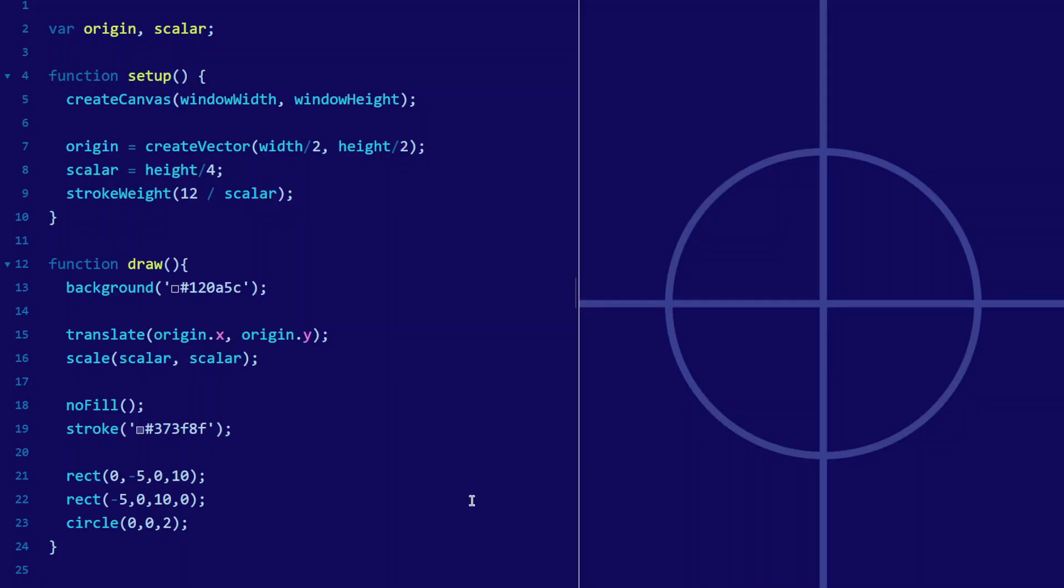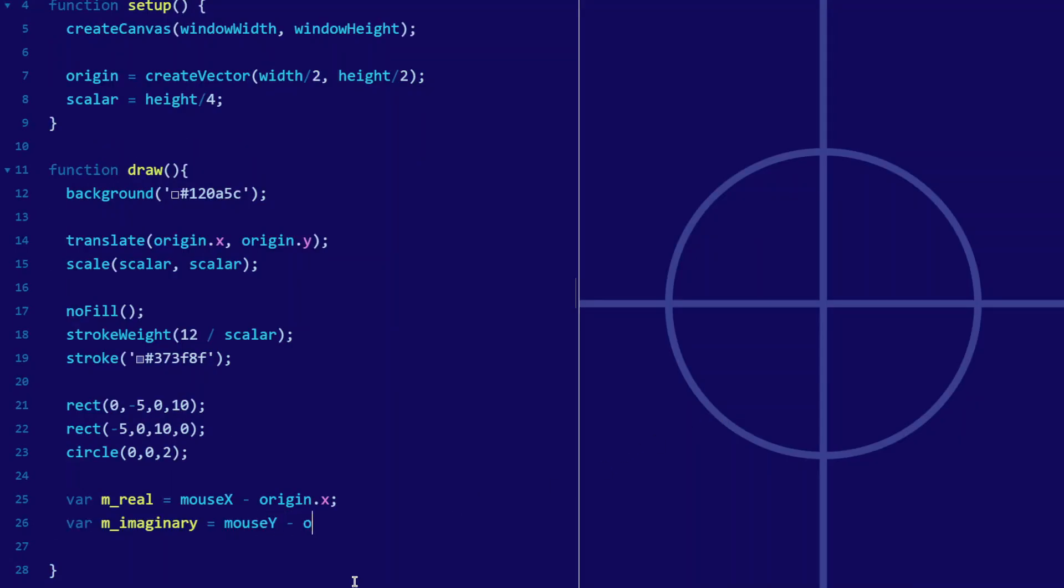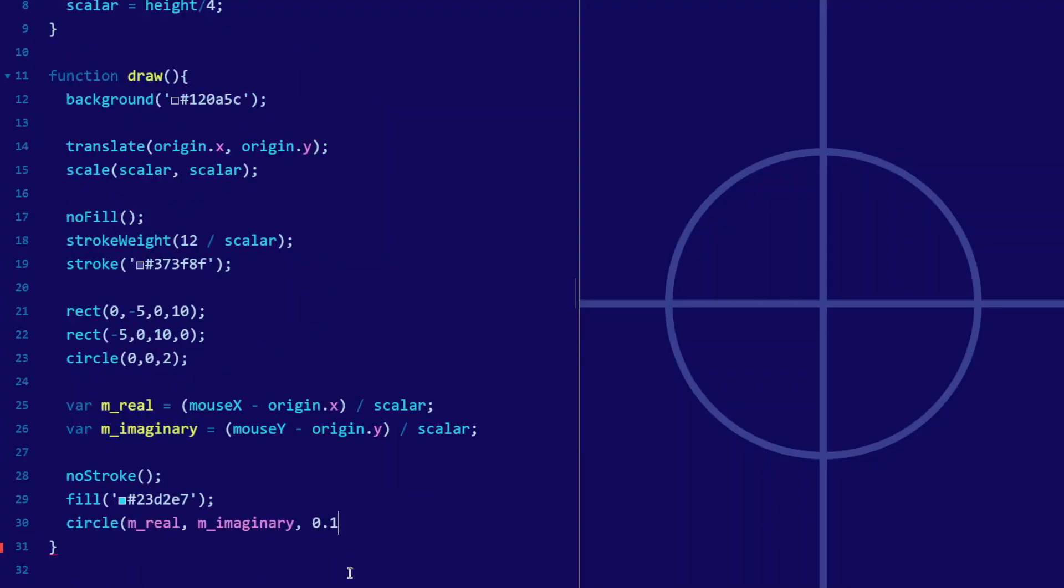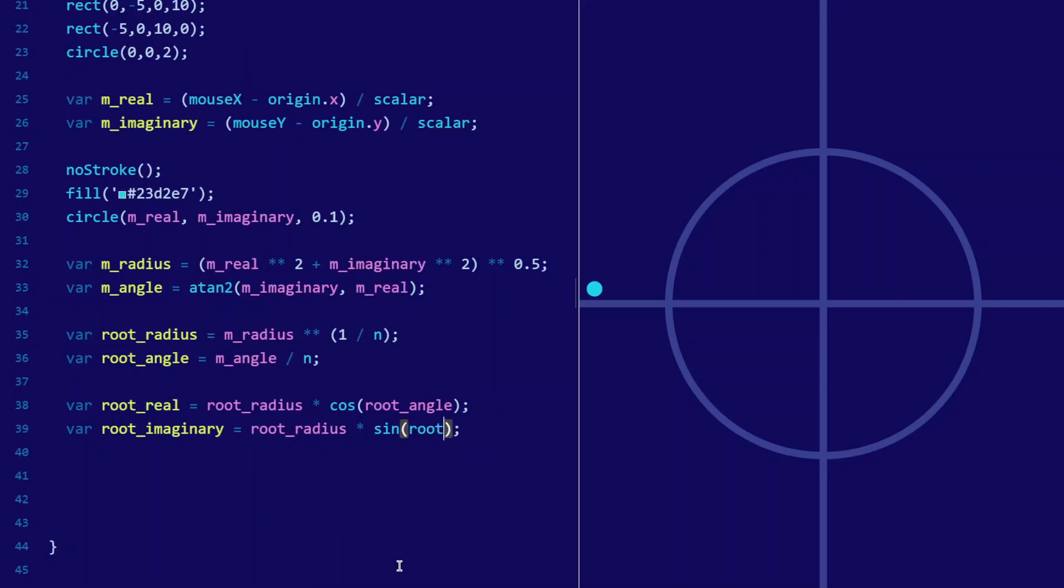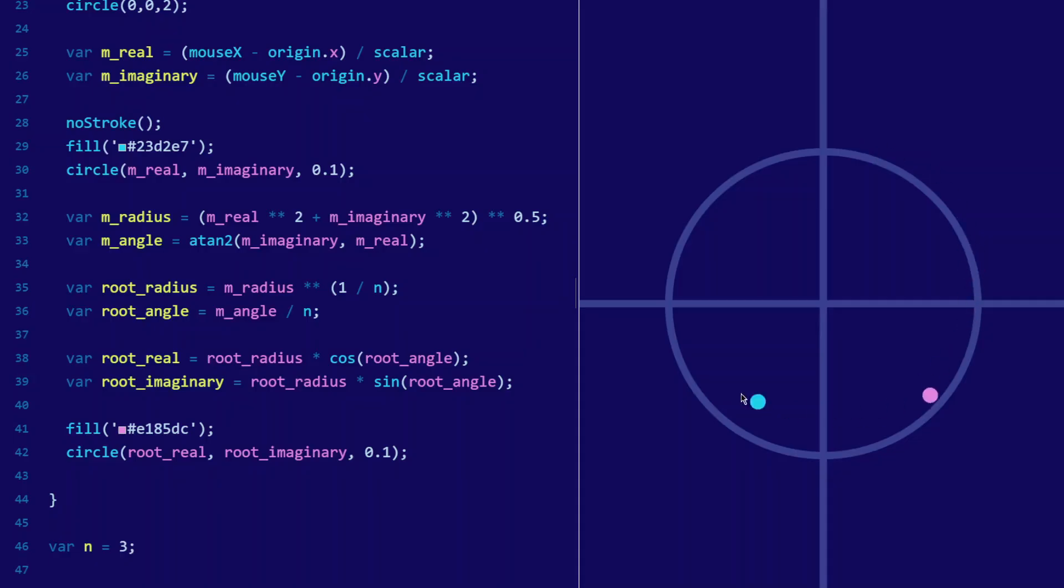Next, to make this interactive, let's find the number that the mouse is at. We find the distance between the mouse and the origin, and then divide by that scalar to convert away from pixels. Now let's draw a circle at the mouse position. Nice. Now let's convert the mouse's position into polar coordinates, and then we calculate the radius and angle for the root, then convert the root back into real and imaginary, and then draw a circle at the root. Nice. We now have a program that calculates any nth root.